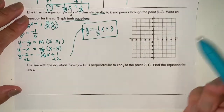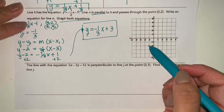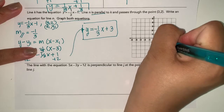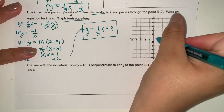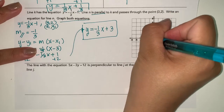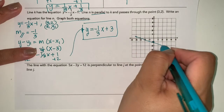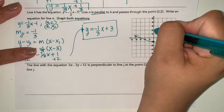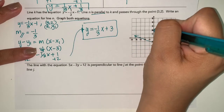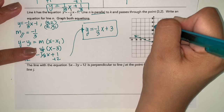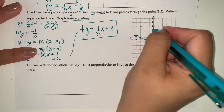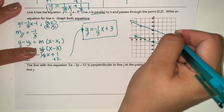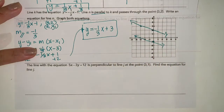Don't forget to graph both equations. The first line has y-intercept negative 1 and slope negative 1 third — go up 1 over 3. The second line has y-intercept 3 and the same slope, negative 1 third. Connect the dots. That's it.